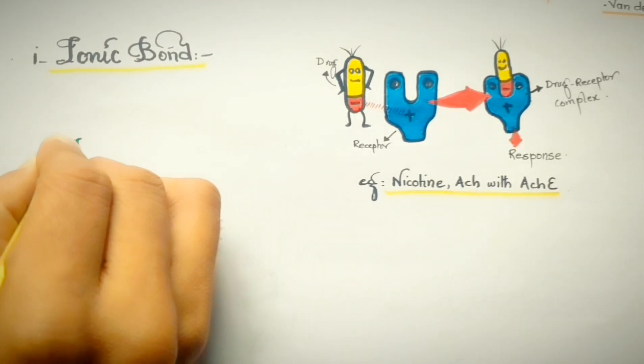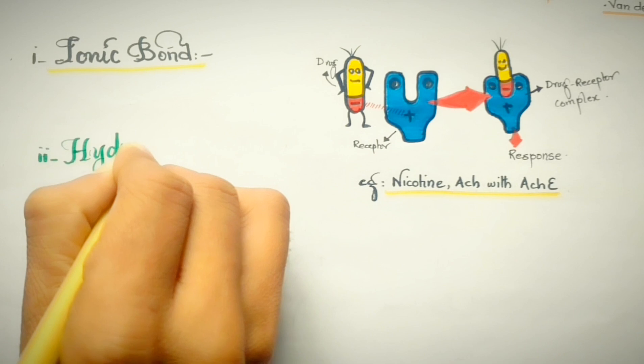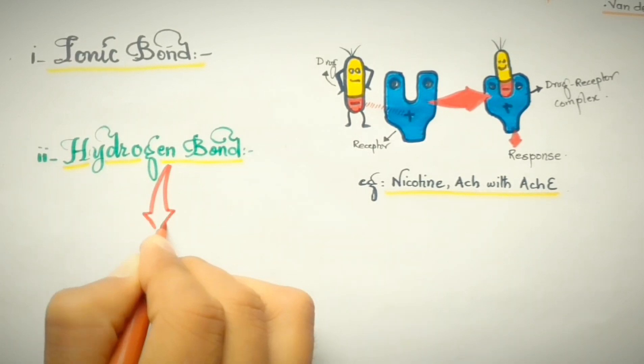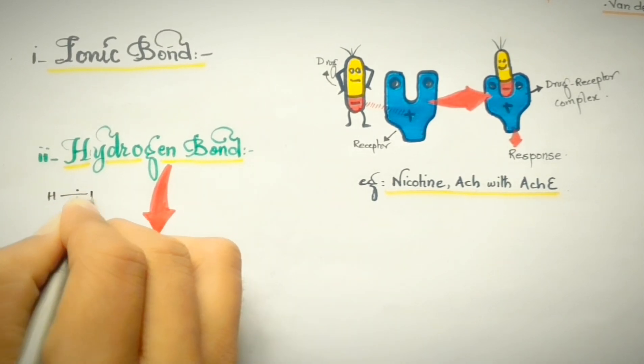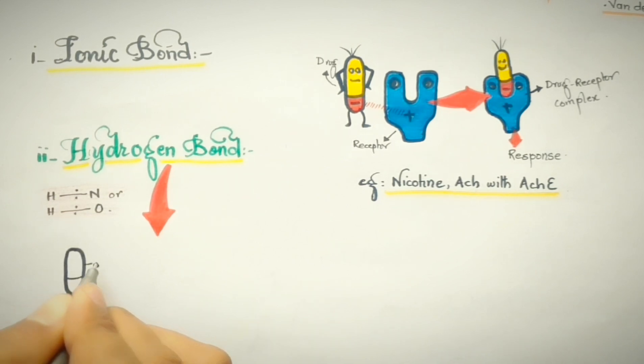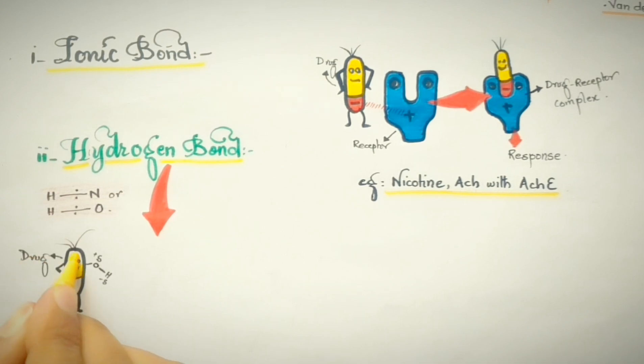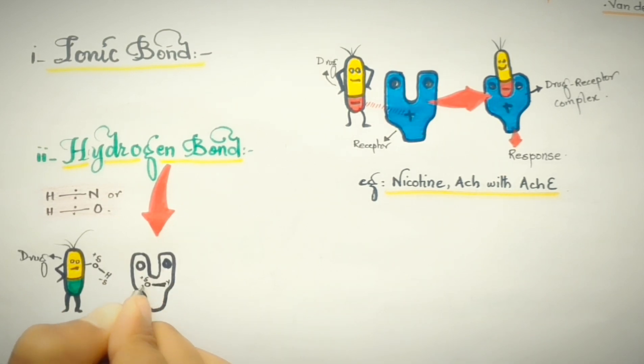The drugs which bond these types of bonds with the receptors include nicotine and acetylcholine bonding with the acetylcholine esterase enzyme. With this, the next topic is hydrogen bond. Well, hydrogen bonding with the receptors occurs in those drugs in which a hydrogen is attached to a most electronegative atom like oxygen and nitrogen, which attracts the electron toward itself and makes the hydrogen partially deficient of electrons, and thus the hydrogen atom becomes partially positive while the most electronegative atom becomes partially negative charged.